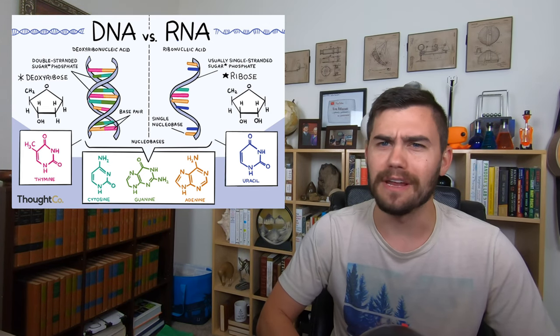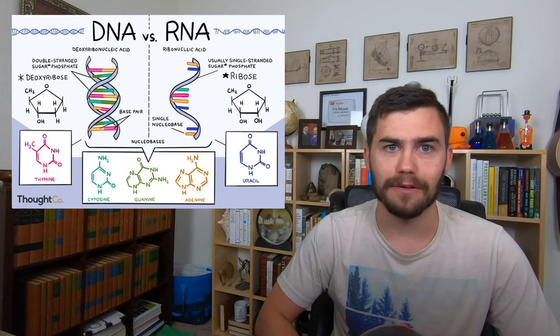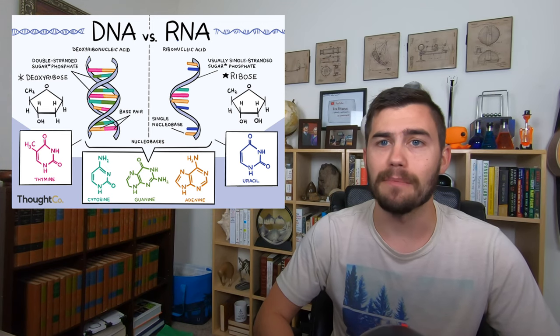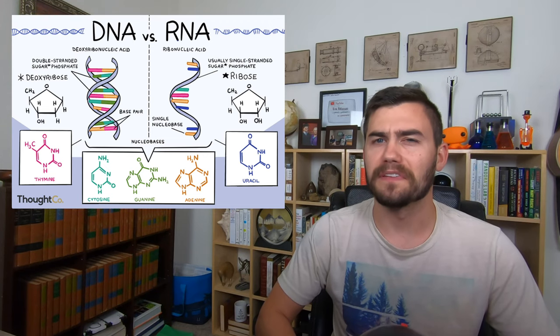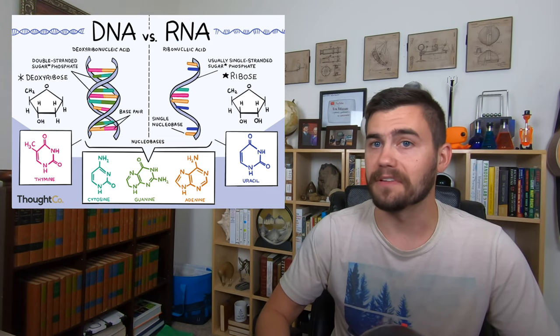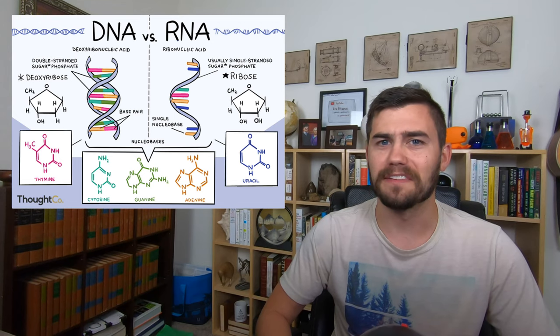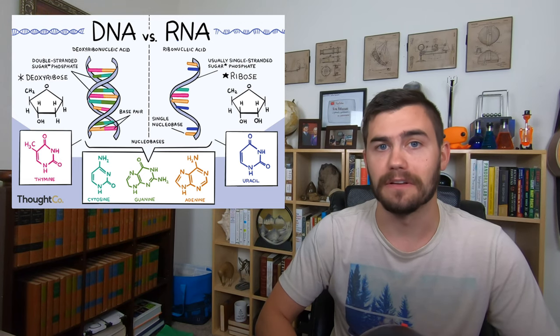RNA molecules are also nowhere near as long as DNA molecules. The largest RNA molecule is made of around 5,000 nucleotides, but the single chromosome of the simplest bacteria are still composed of several hundred thousand nucleotides.